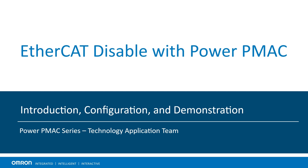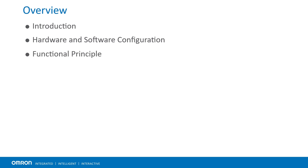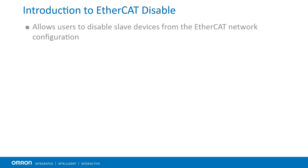In this video, we are going to discuss the EtherCAT disable feature introduced in the Power PMAC firmware 2.7 and higher. We will cover an introduction to the EtherCAT disable, hardware and software setup to use this feature, working principle, and finally a live demonstration of disabling slaves from the configuration.